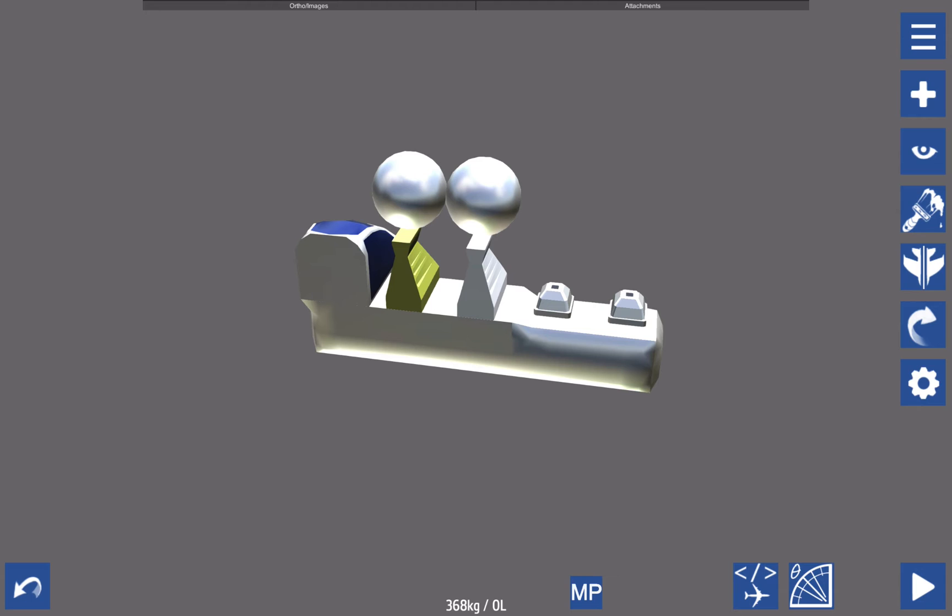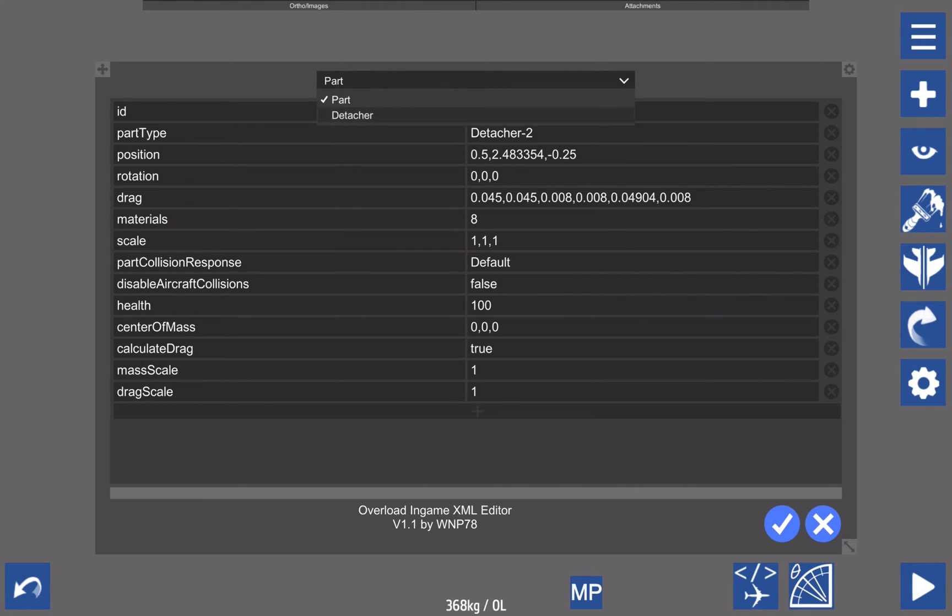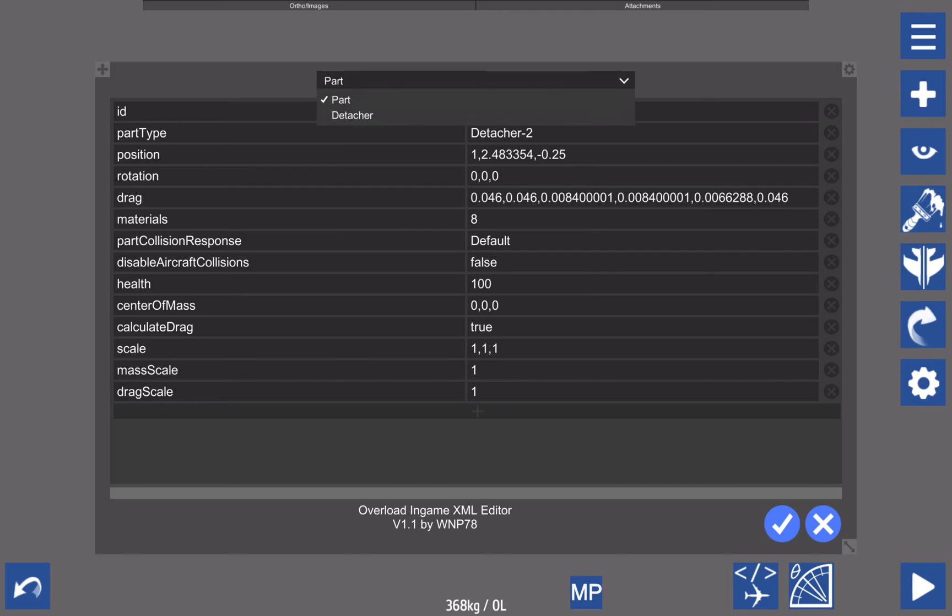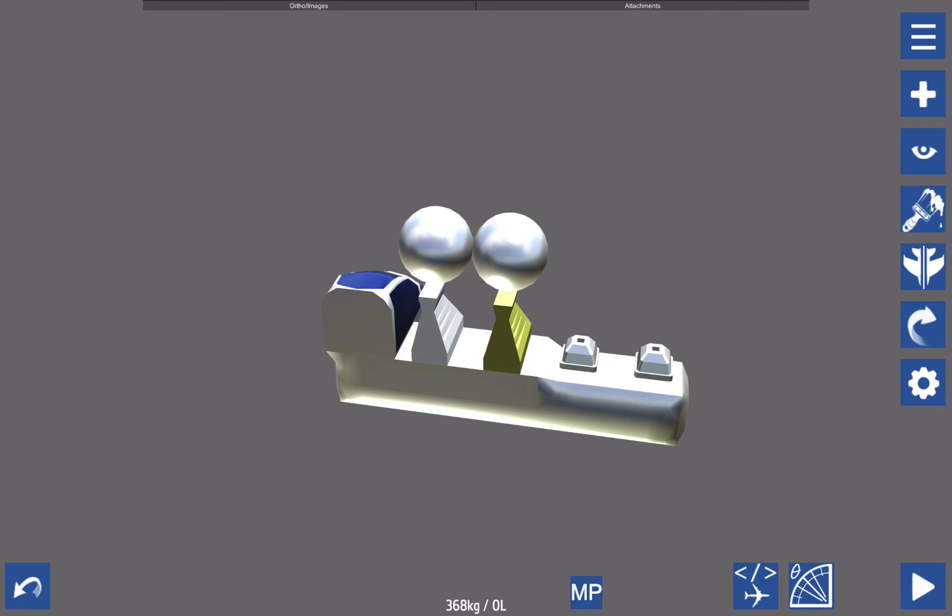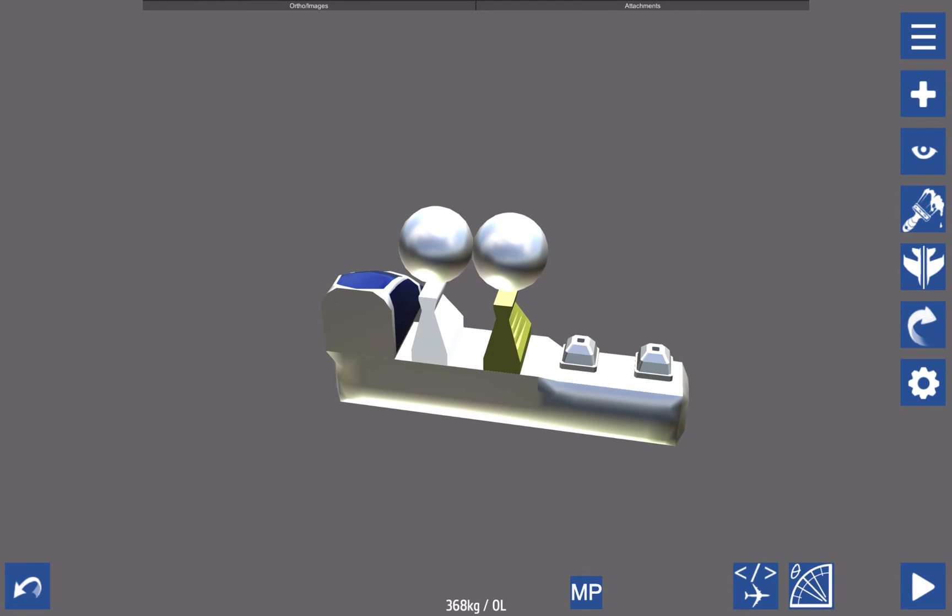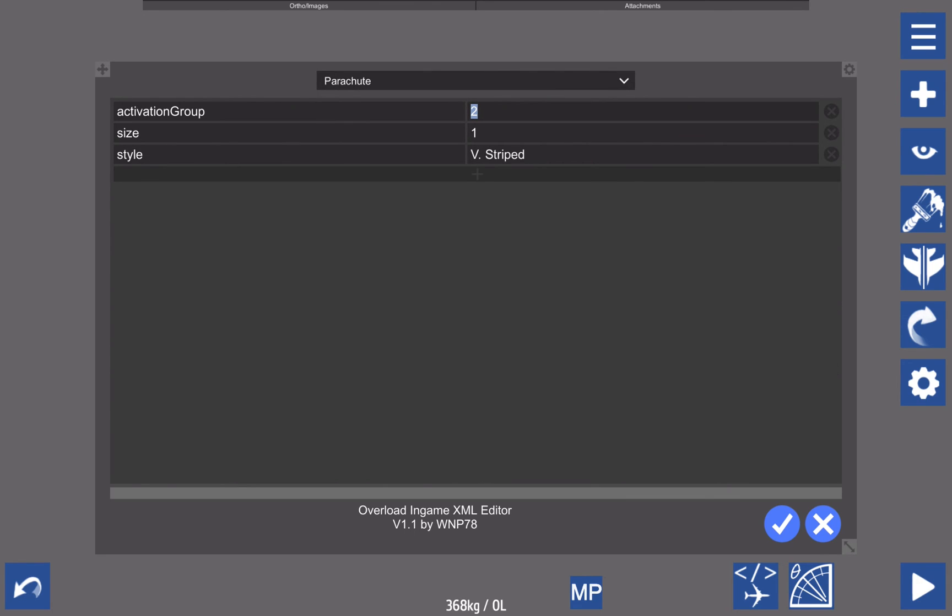We're here back in the SimplePlanes designer. This particular setup I've created is to demonstrate the capabilities of this activation device. First of all, this left detacher has been given an artificial Funky Trees delay of five seconds, and this right one has been given an inbuilt delay of five seconds. We should be able to see that if our activation delay script works properly, then after we press activation group one, both of these should go off at the same time.